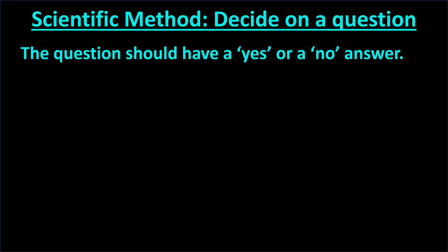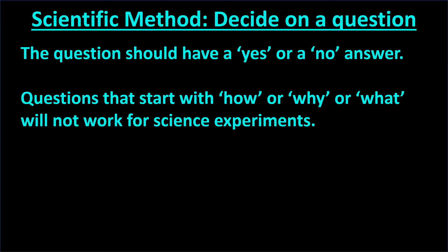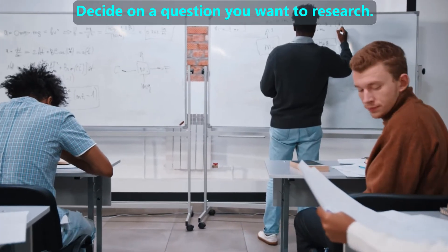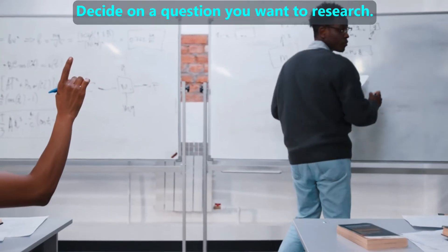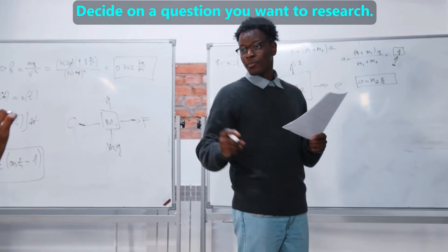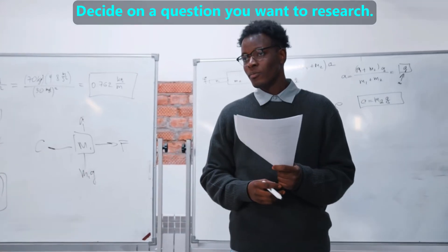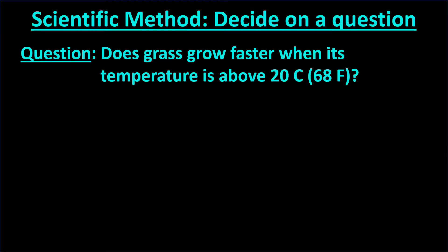Our specific question for a research experiment should have a yes or no answer. Questions that start with how, why, or what will not work for science experiments, because in the next step of the scientific method, we will arrange this question as a hypothesis, and a hypothesis can only be true or false. We can only answer science questions that start with what, how, and why once we or other scientists have done many research experiments and are able to summarize those results. Our research question could be: does grass grow faster when its temperature is above 20 degrees Celsius?